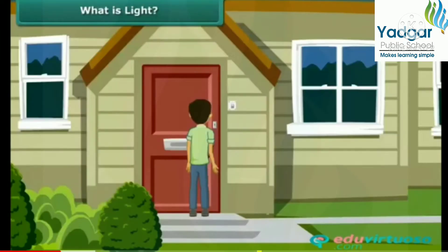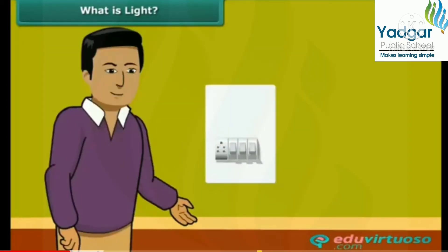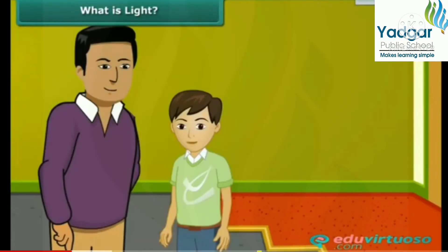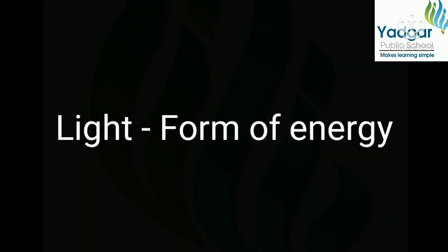It is night and you step inside the house. There is darkness all around. Everything appears black. You can hardly see anything. Your father switches the light on. Now you can see everything clearly. It means light enables viewing. Therefore, light is defined as a form of energy which makes things visible. Light is a form of energy.